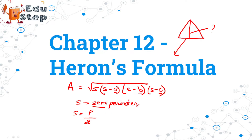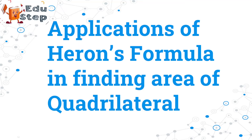This exercise is on the topic: Applications of Heron's Formula in finding the area of quadrilaterals. Until now we used Heron's formula to find the area of a triangle. Now we are going to use it to find the area of a quadrilateral. There is no change in the formula — we are going to apply the same formula by dividing our quadrilaterals into triangles.